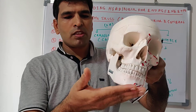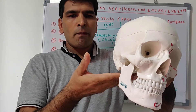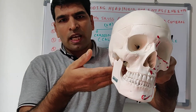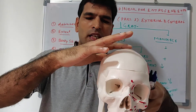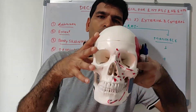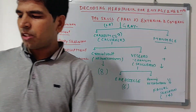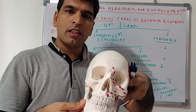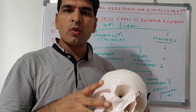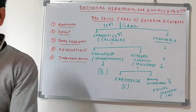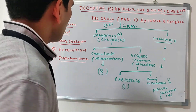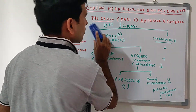The skull extends from the chin to the foramen magnum, the occipital condyles, and up to the vertex. Mandible is included in the skull, but the hyoid bone is not included in the skull. This is all about the basics of the skull.